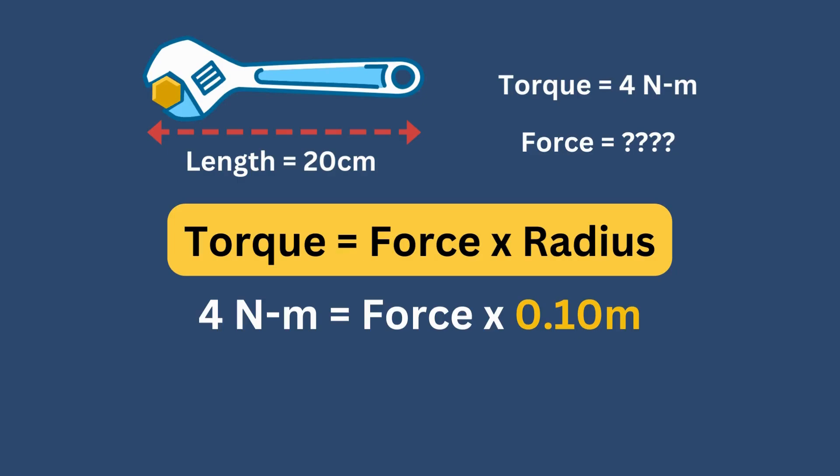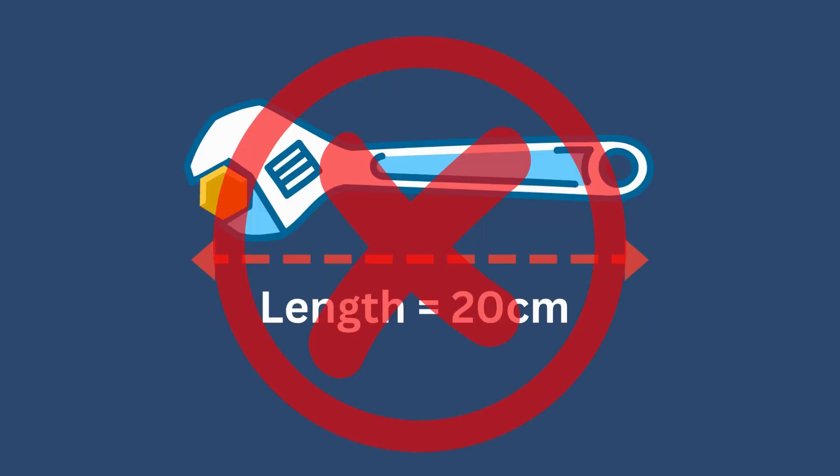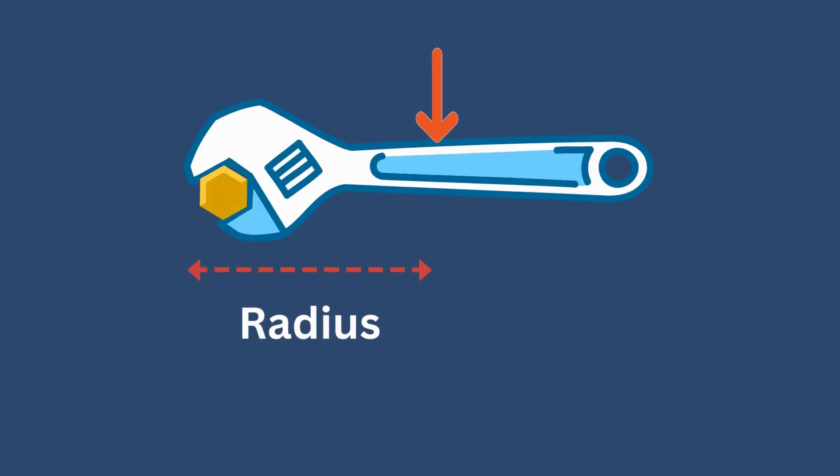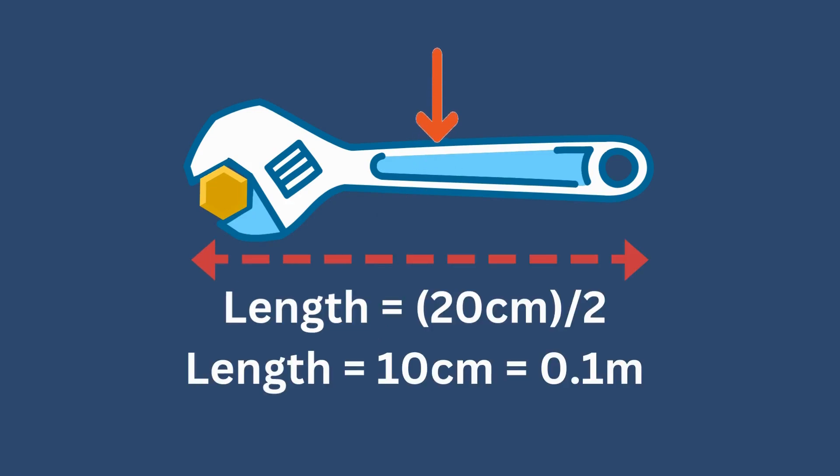We will still write 4 newton meters equals force, but times 0.10 meters. This is because the length we need to write in the equation is not the length of the object, but the distance of your hand to the head of the wrench. Since you are holding the wrench in the middle, we can simply take half of the total length of the wrench as the radius. So, the length we will write in the equation is 0.10 meters.